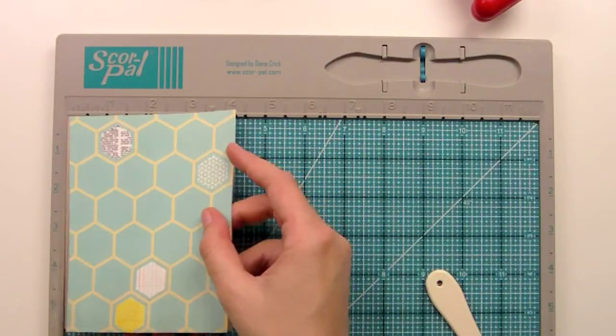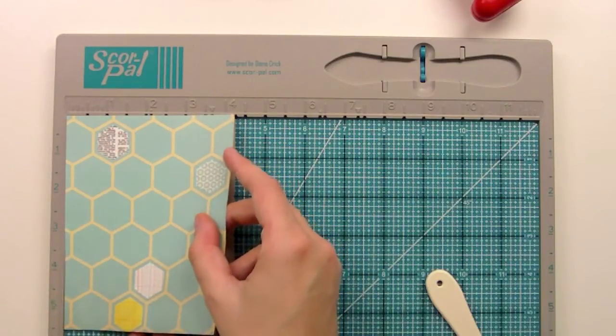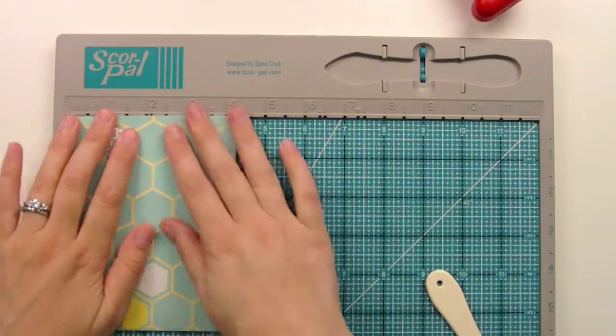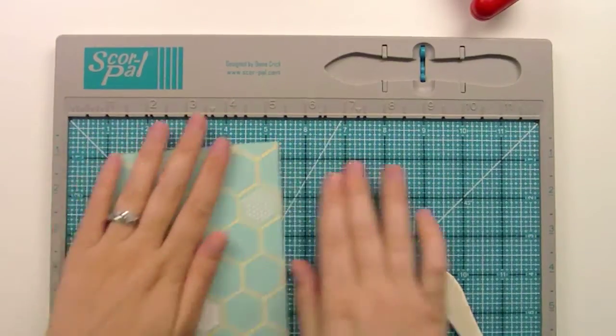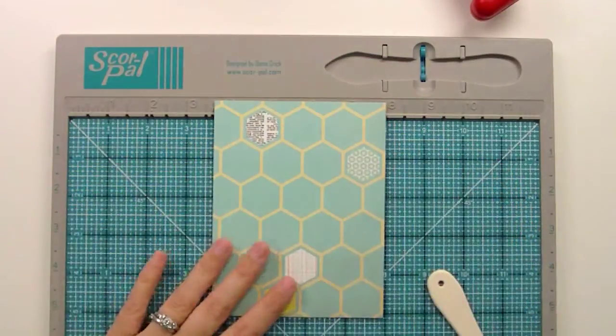I butt the card base up into the corner, and then I take the patterned paper and butt that into the corner also. That helps me keep it straight versus relying on my eye to keep it straight. So I hope that helps some of you that are like me that can never get things on properly.